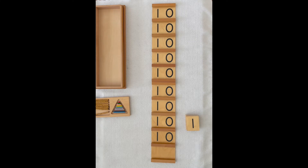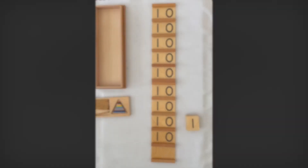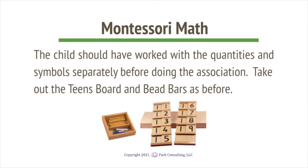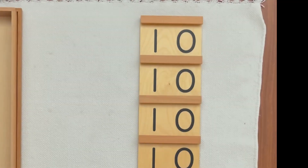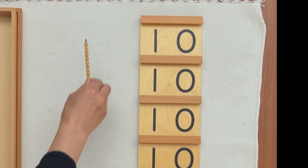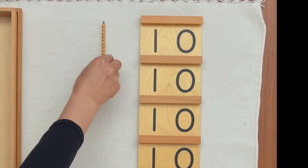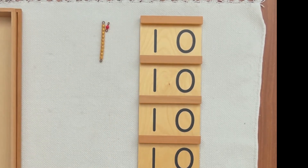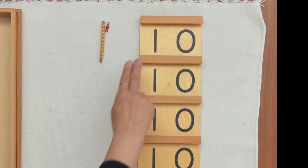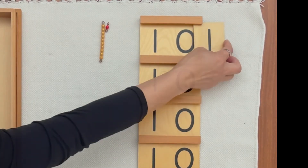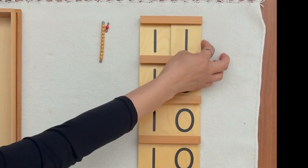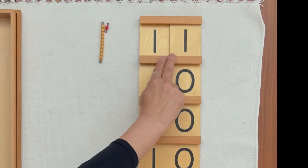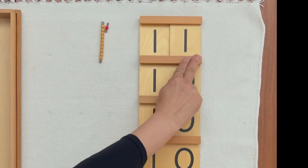This is called Teens Board and Bead Bars. One ten, one is eleven. This is how we write eleven.